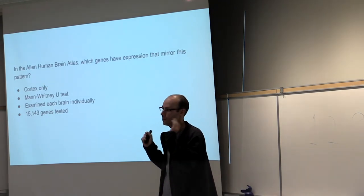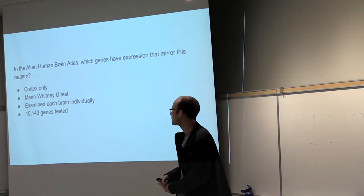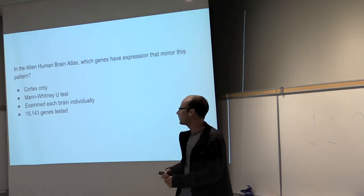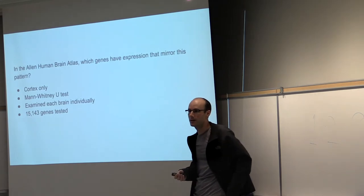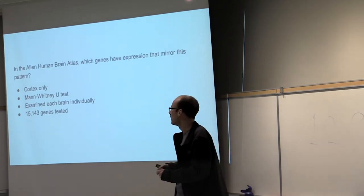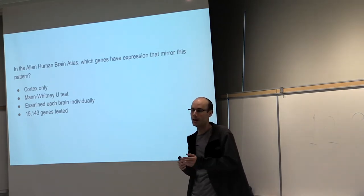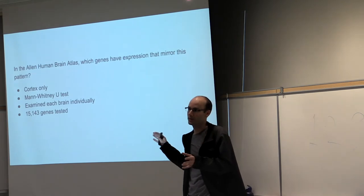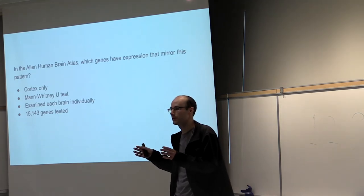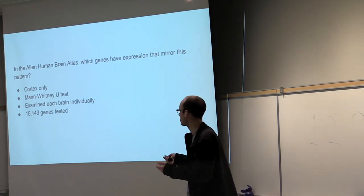We only deal with the cortex because you don't get much fine resolution with FDG-PET in the subcortex. We used a non-parametric Mann-Whitney U test / Wilcoxon test. We did this for each brain individually, because they were done years apart using different technologies. We used 15,000 genes — removing genes that weren't consistent between microarray and RNA sequencing, using a QC pass-fail number from the Allen Institute to narrow down the genes.